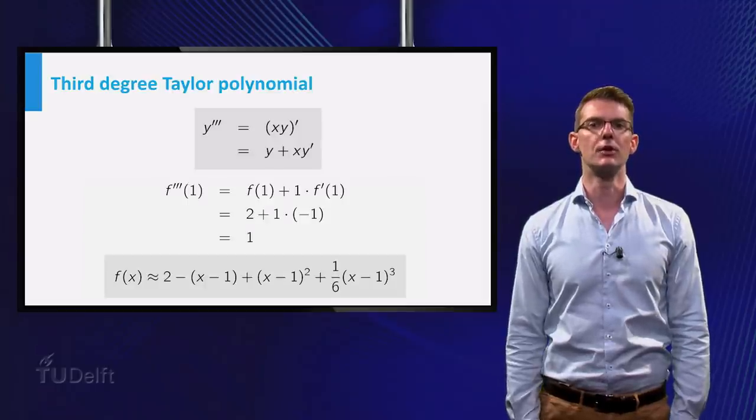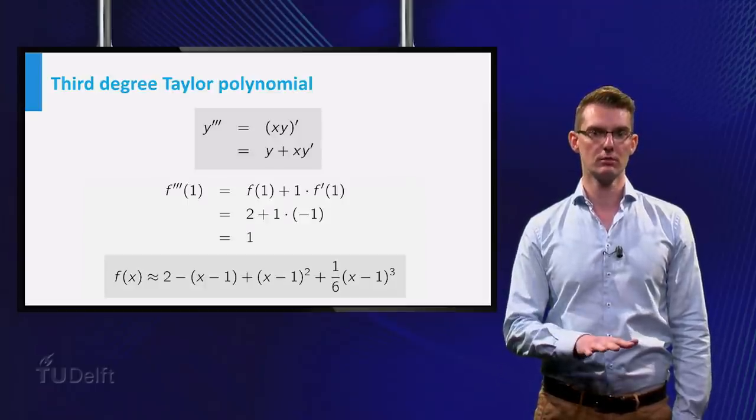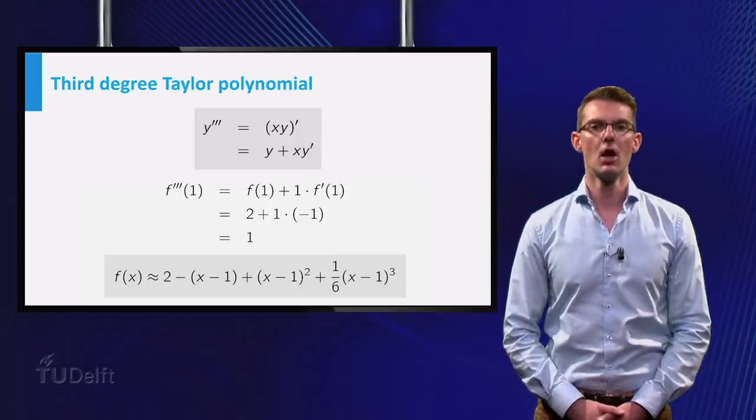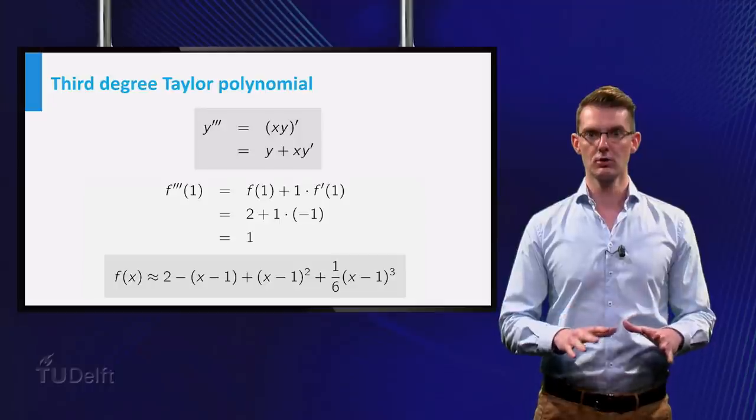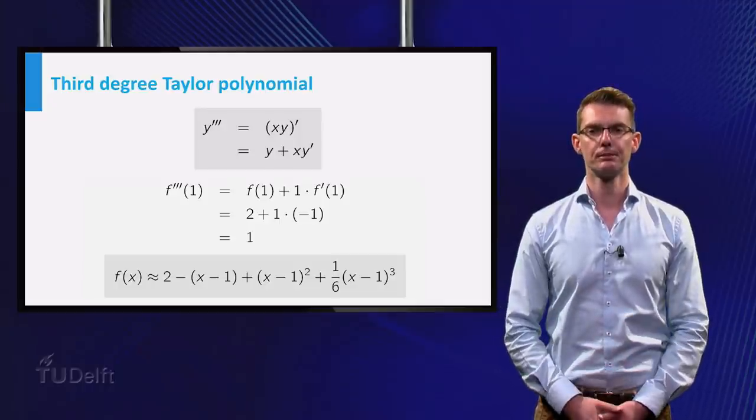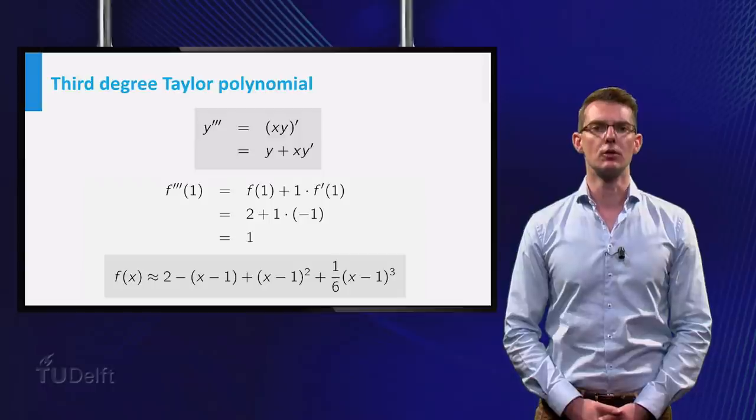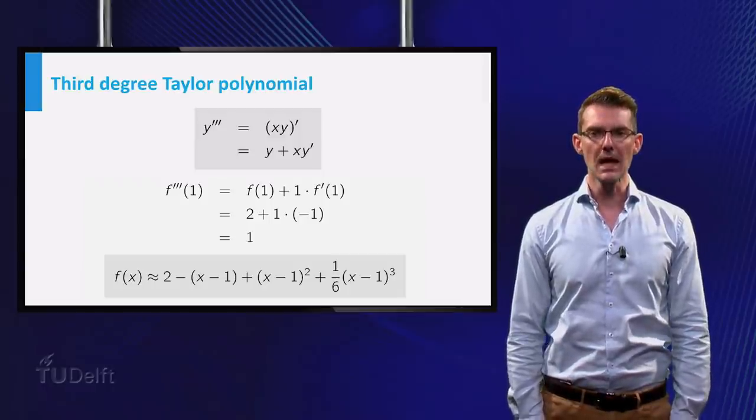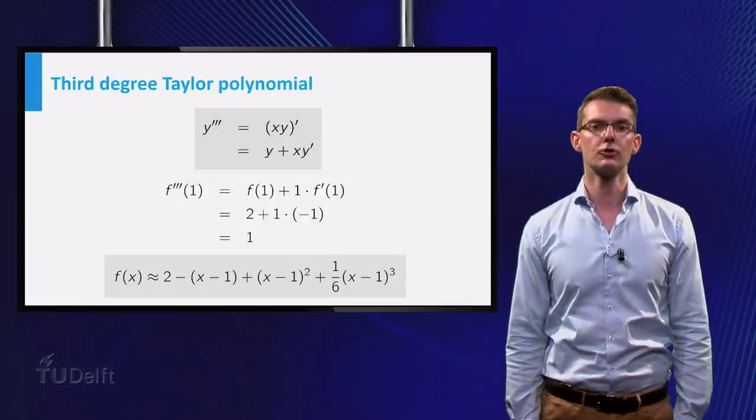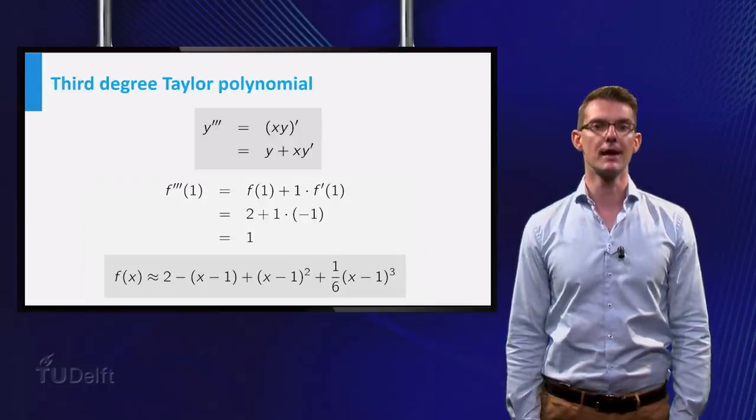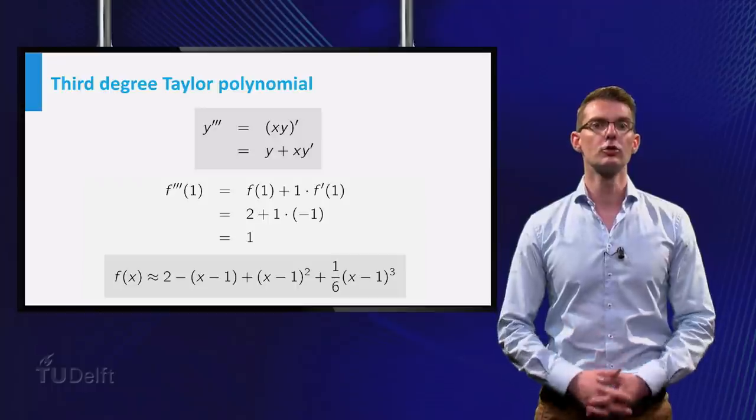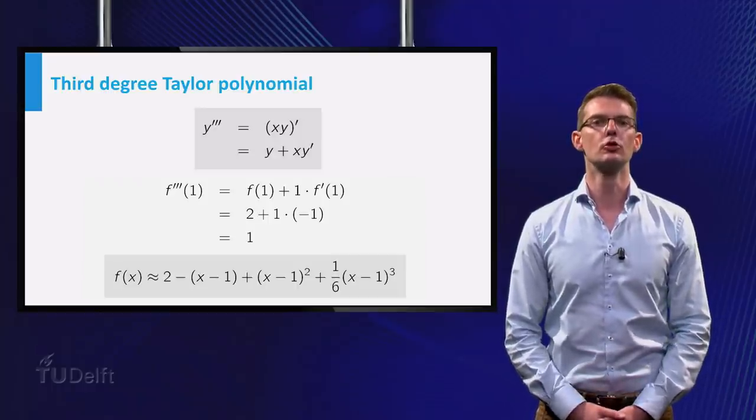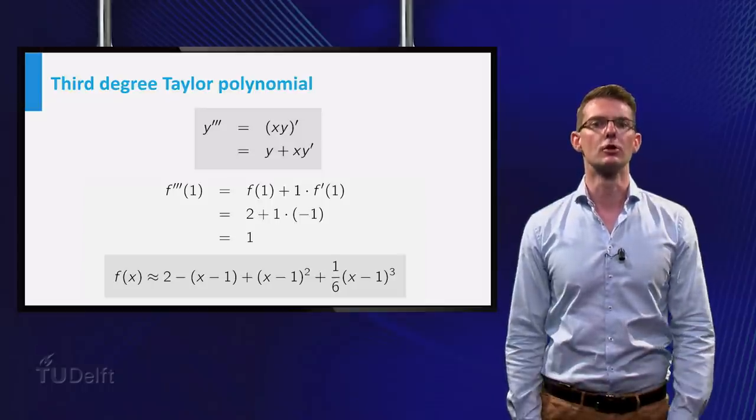We can simply take the derivative of both sides of the equation. We do this and find that the third derivative of f of x must be equal to f of x plus x times f prime of x. You can find the right hand side of the equation by using the product rule for derivatives. This equality then allows us to compute the third derivative of f of x in x is 1 and to construct the third degree Taylor polynomial that approximates the solution of the original differential equation.